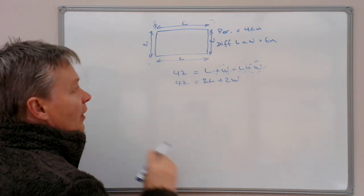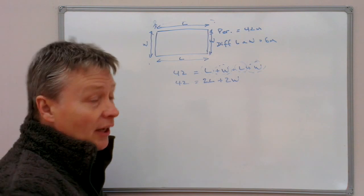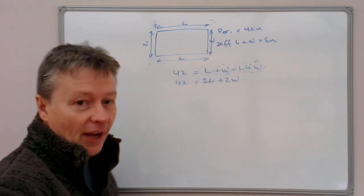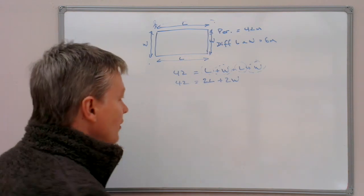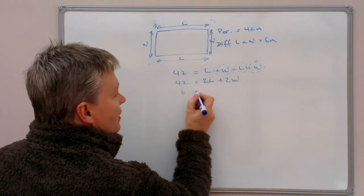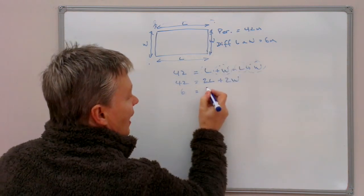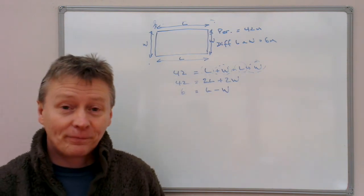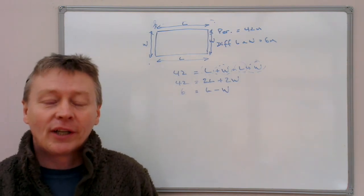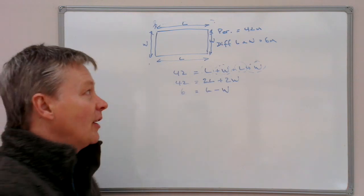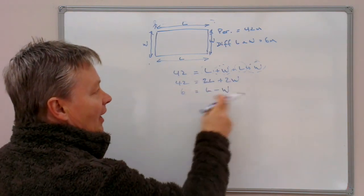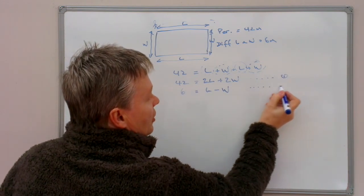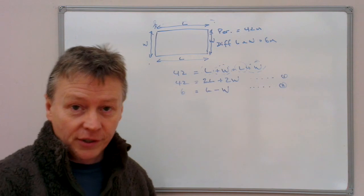So the other equation that I can generate from this information is the difference between the length and the width is 6 metres. So in other words, 6 metres equals the length, take away the width. I hope that's OK. I've gone through that fairly quickly. But if you do stop the video, then hopefully you should be able to see how these two equations, this is equation 1 and this is equation 2, how those two equations have been derived.